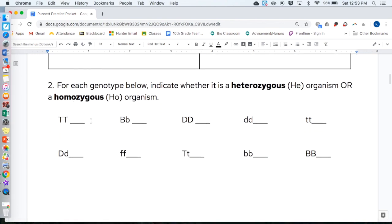Question two, for each genotype below, remember the letters mean genotype, the way it looks is called phenotype, indicate whether it's heterozygous, you can just write HE, meaning it has two different letters, or homozygous, meaning it has two of the same, whether that's two dominant, two capitals, or two recessives, either would be homozygous for the organism. You can write HE and HO.